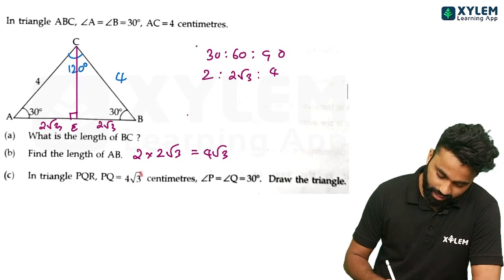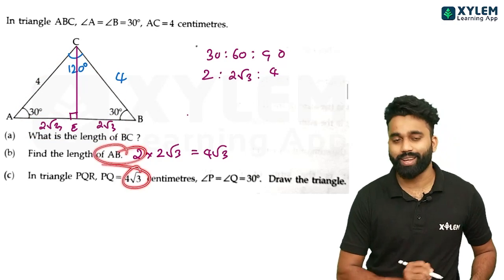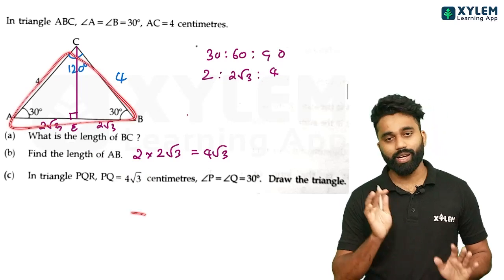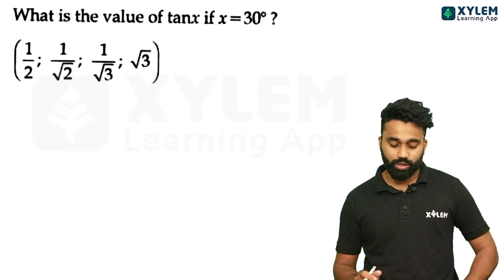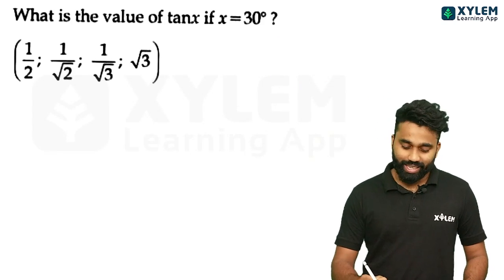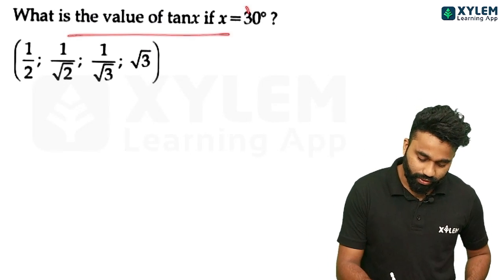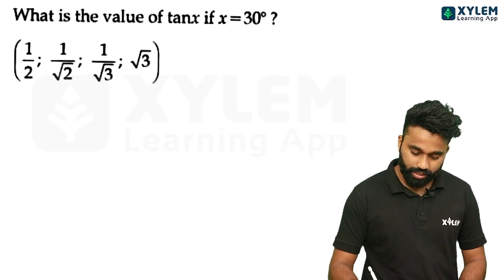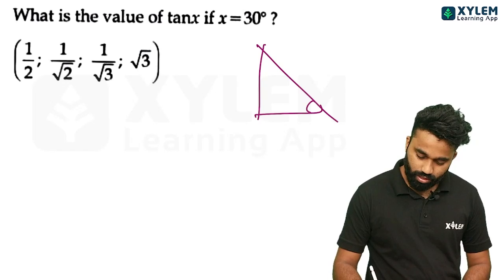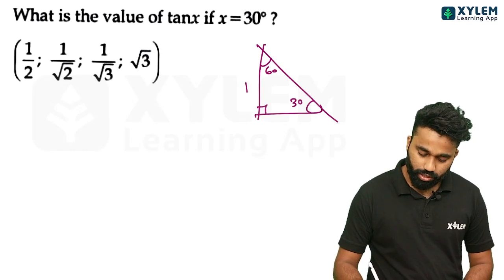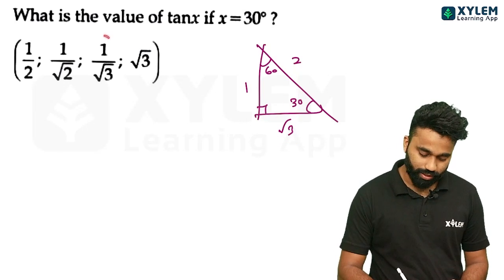What is the answer to the question? The answer is 3. What is the value of tan x? If x equals 3 and you have a right triangle, x is equal to 30. Now, 1 is root 3. Tan x is opposite by adjacent: 1 by root 3. This is the answer.